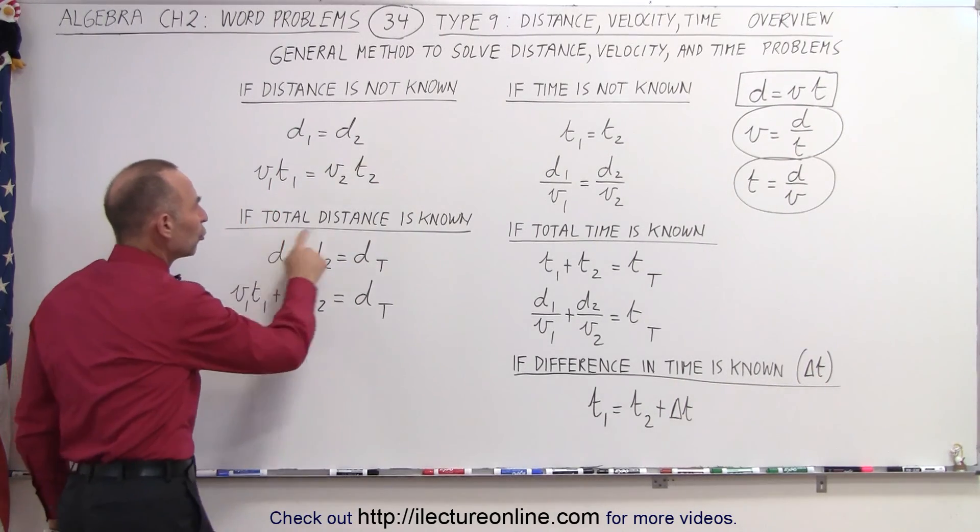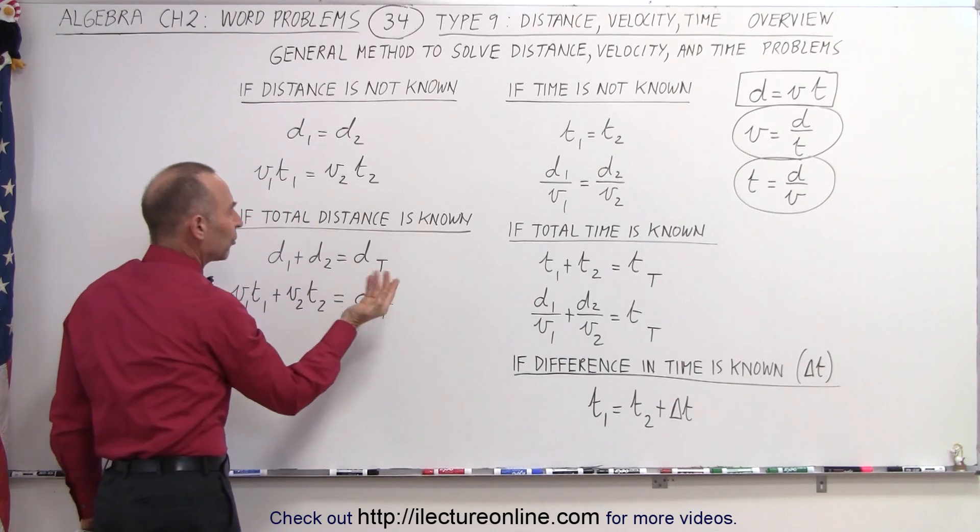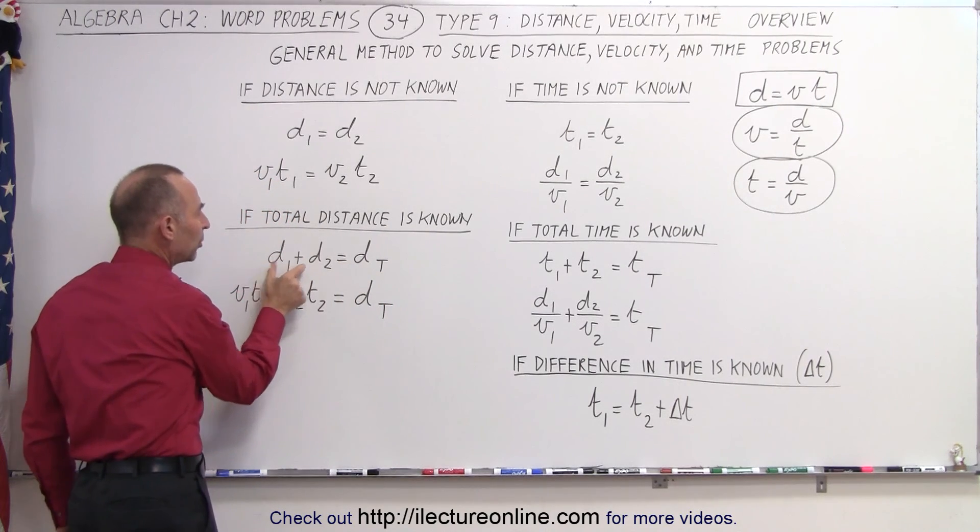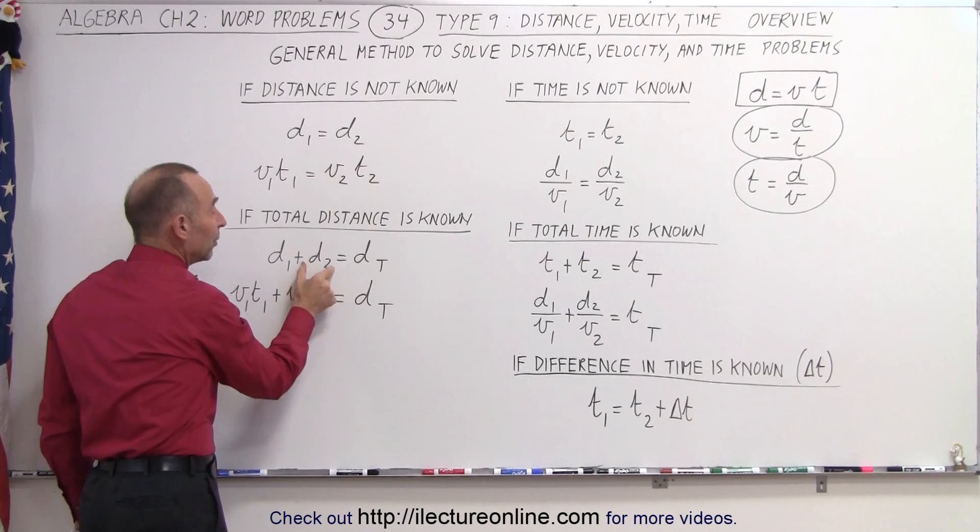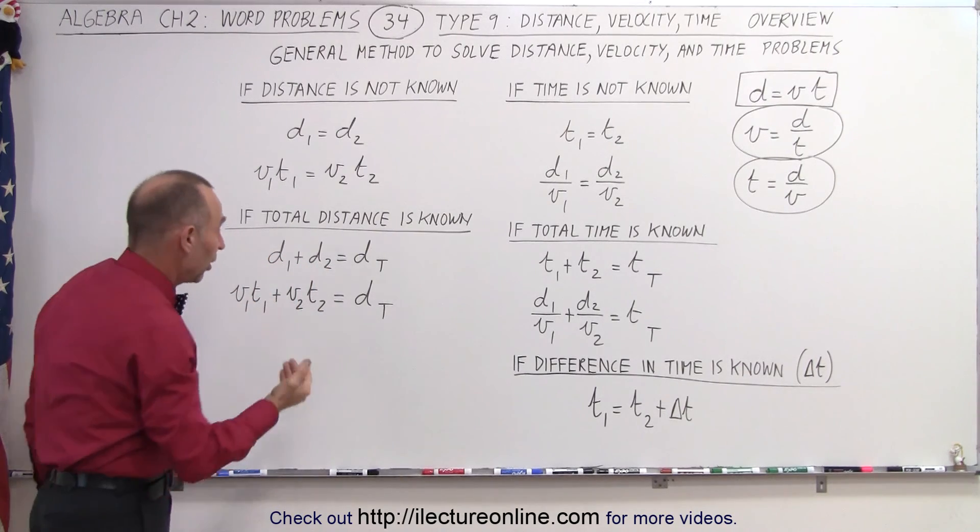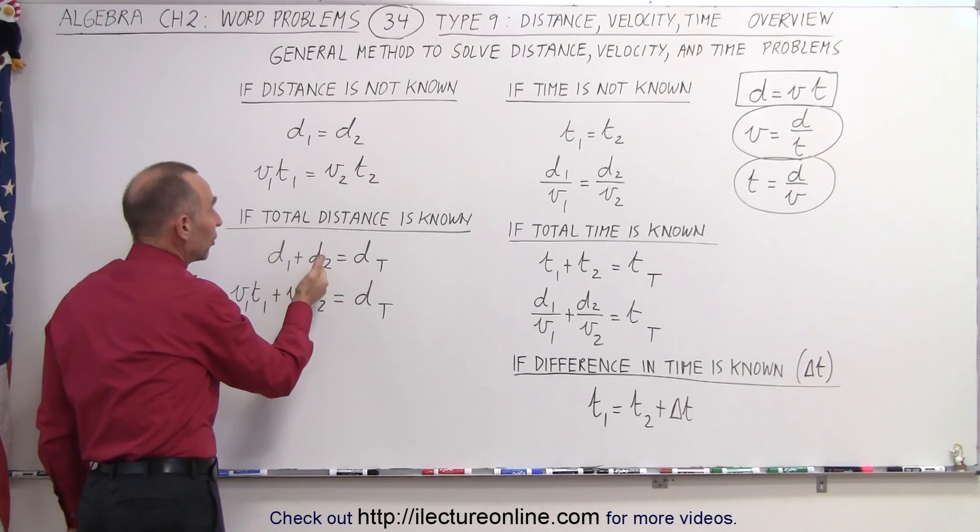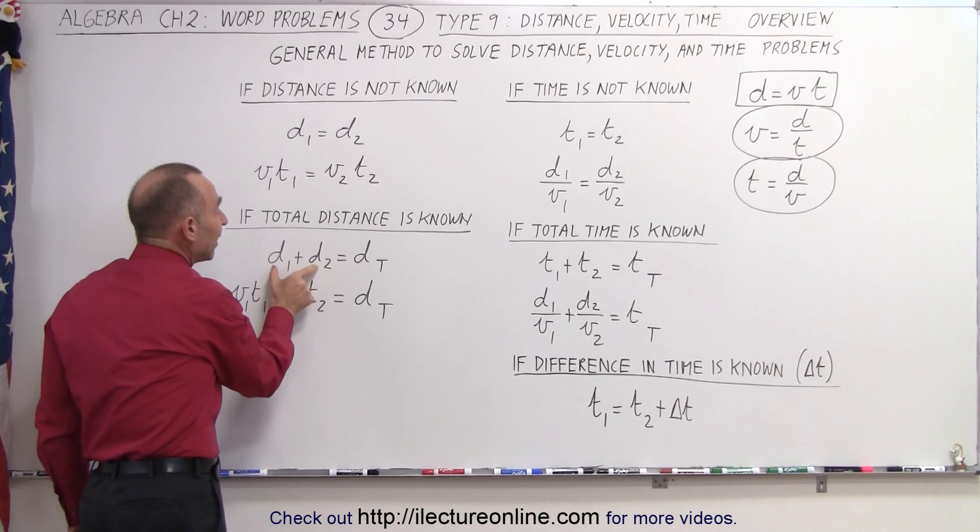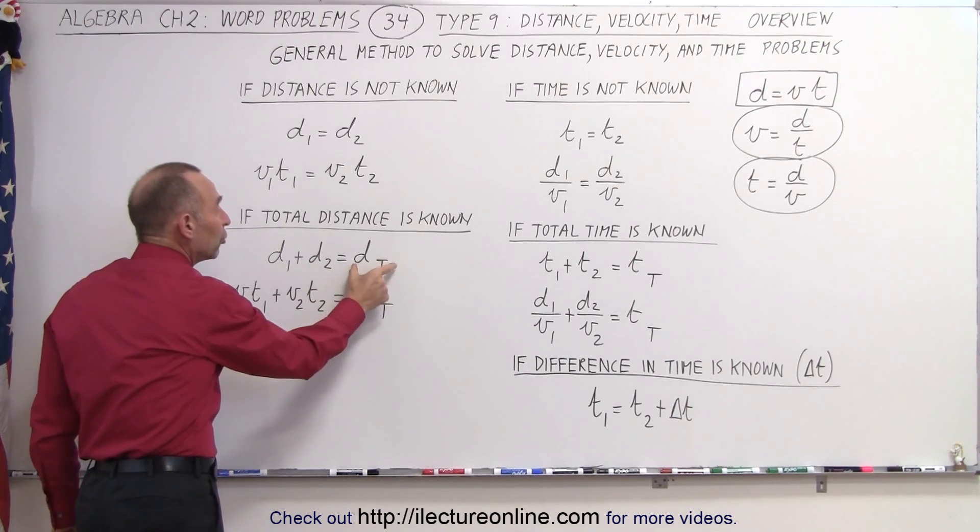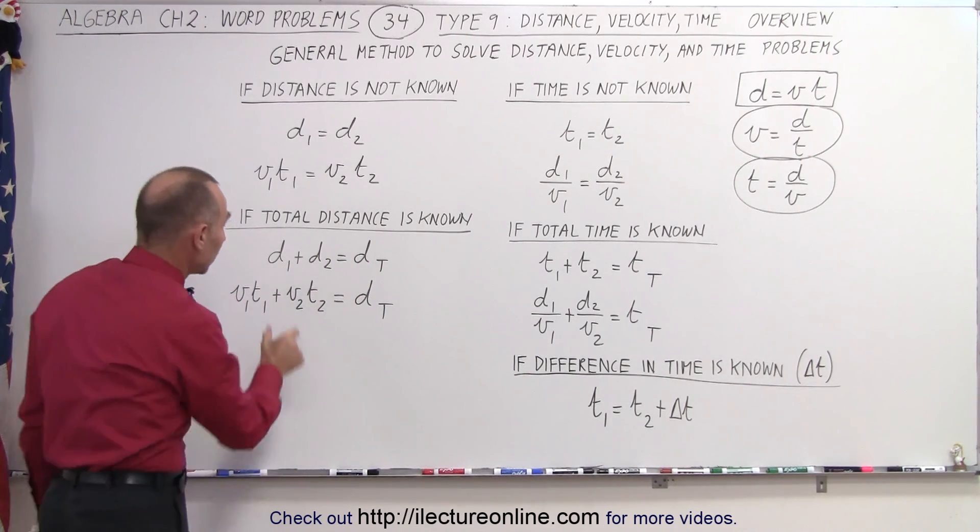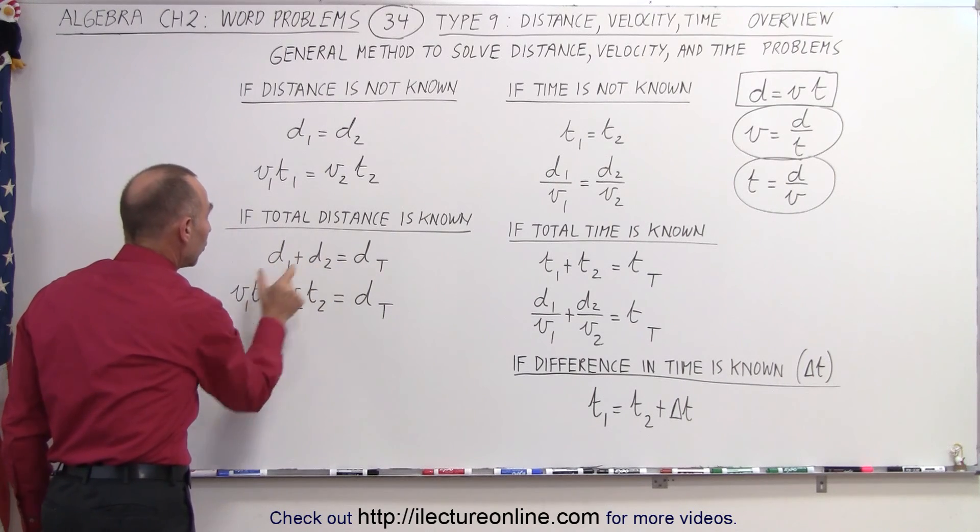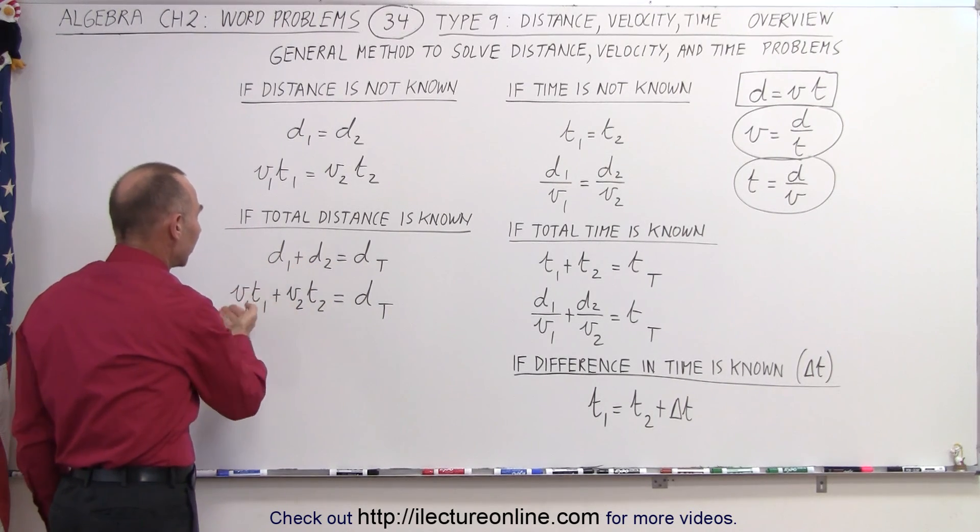Or, if we know the total distance, then sometimes we can set up an equation where we sum up the two distances, which we don't know what they potentially are, so we can call them x and the total distance minus x, and then set the sum equal to the total distance that is known, and then replace the two distances we don't know by their equivalence, velocity times time.